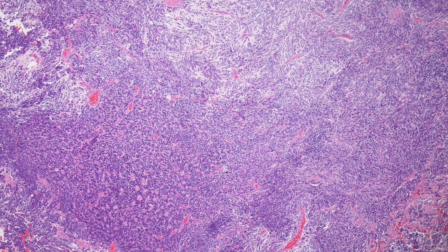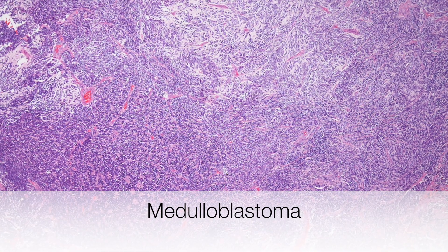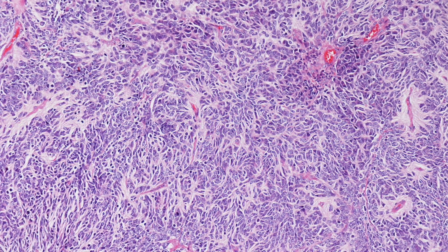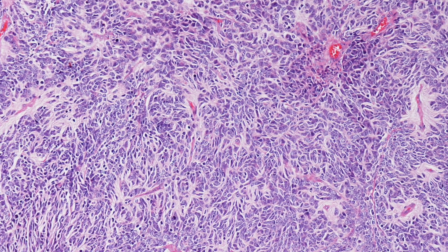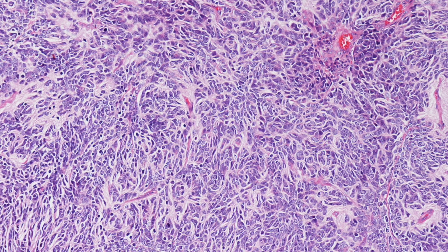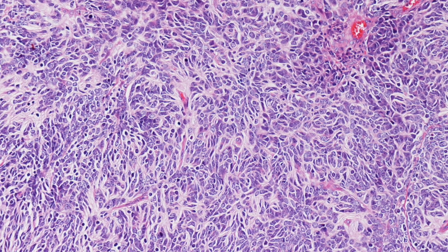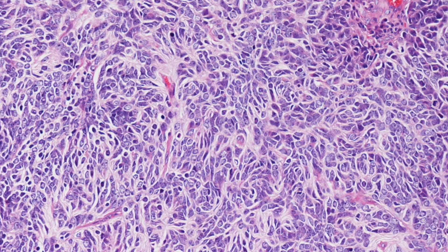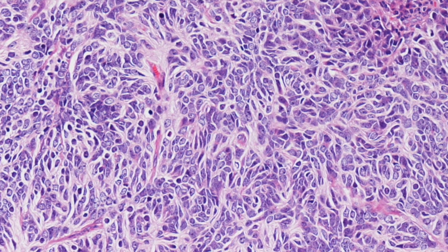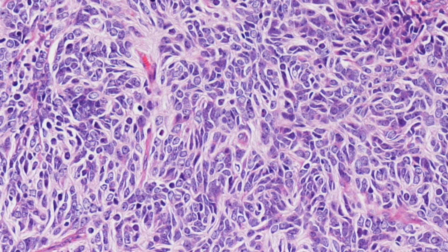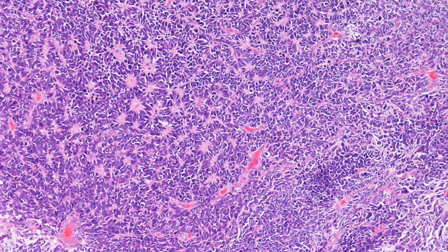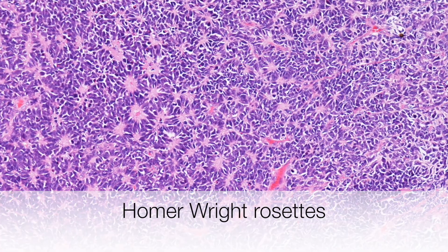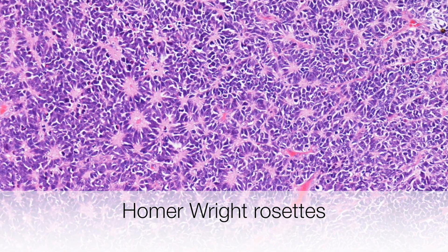On low power the tumour is composed of sheets of small dark cells. The tumour cells show hyperchromatic nuclei that are rounded in areas and some are rod-shaped and angulated with scanty amounts of cytoplasm. And in this area there is a collection of Homer Wright rosettes.